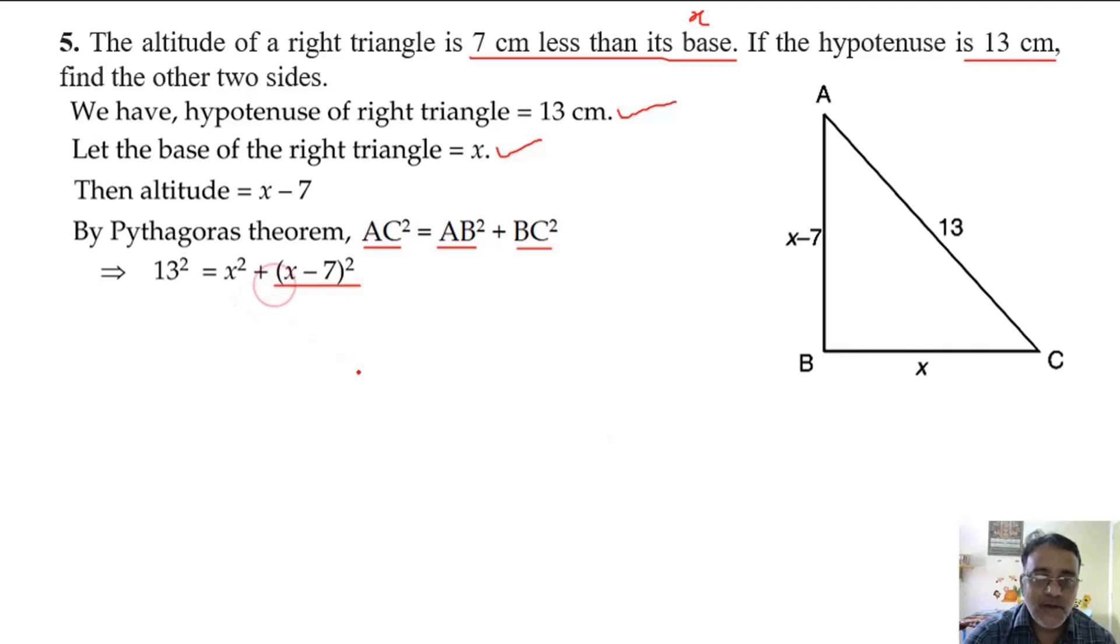Let's expand. 169 equals x squared plus x squared minus 14x plus 49. This is BC squared and this is AB squared.